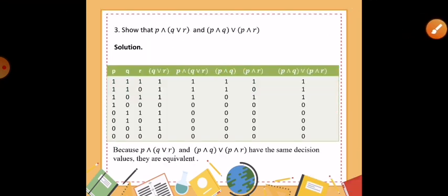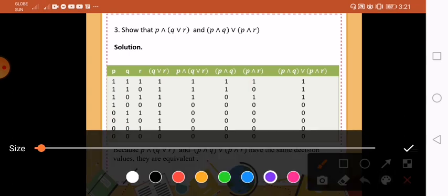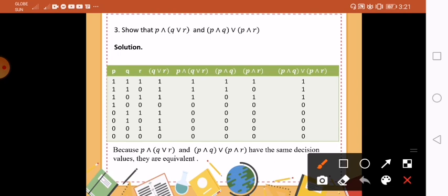We move to the third example. Show that P and (Q or R) and (P and Q) or (P and R) are logically equivalent. This time we need three propositions: P, Q, and R. The pattern is P: 1, 1, 1, 1, 0, 0, 0, 0; Q: 1, 1, 0, 0, 1, 1, 0, 0; R: 1, 0, 1, 0, 1, 0, 1, 0. Next, we need Q or R, so we use the disjunction: 1, 1, 1, 0, 1, 1, 1, 0.